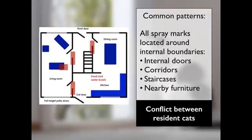We don't always see these two pure patterns of all-internal or all-external spray marking. Quite often we see a combination of both, because there are internal threats as well as external threats due to a high level of cat population density in an area. But those are the common patterns you will see, and they enable you to understand where the tensions might be arising from.